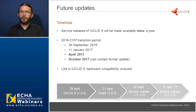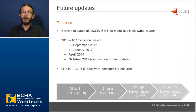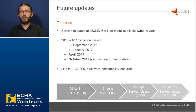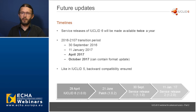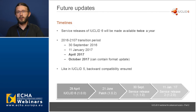In terms of future updates, starting next year we are planning two service releases of IUCLID 6 per year. However, 2016-2017 is a transition period — we are planning a service release at the end of September, available on the 30th of September, and a second update on the 11th of January. After that, we will have two updates per year in April and October. Only the October release will include format updates, but like in IUCLID 5, we will ensure backwards compatibility.